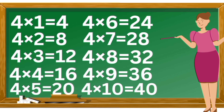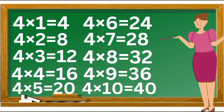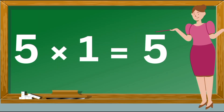Four threes are twelve. Four fours are sixteen. Four fives are twenty. Four sixes are twenty-four. Four sevens are twenty-eight. Four eights are thirty-two. Four nines are thirty-six. Four tens are forty.